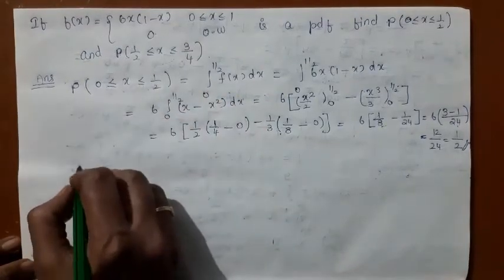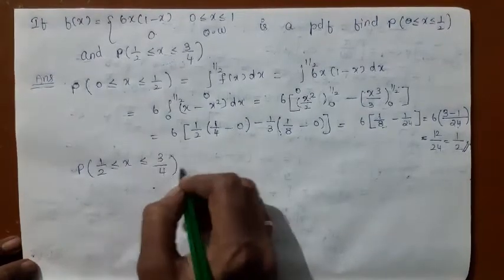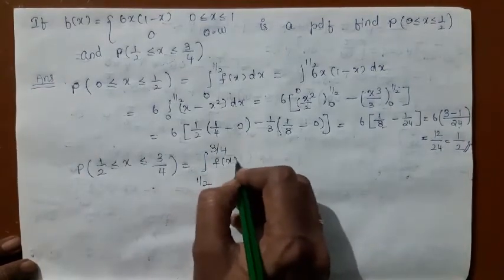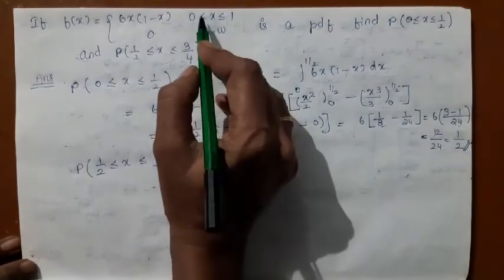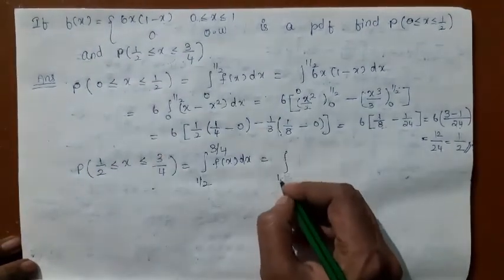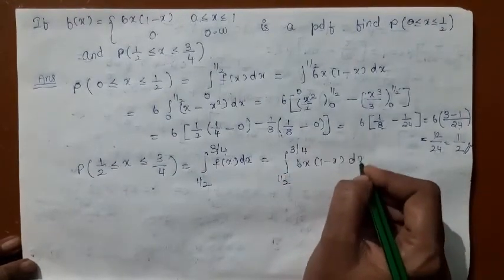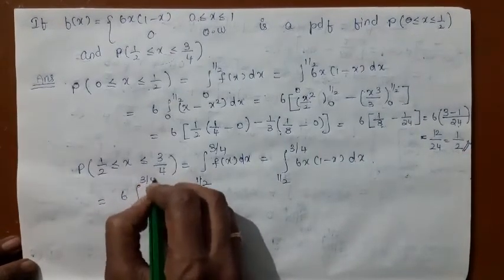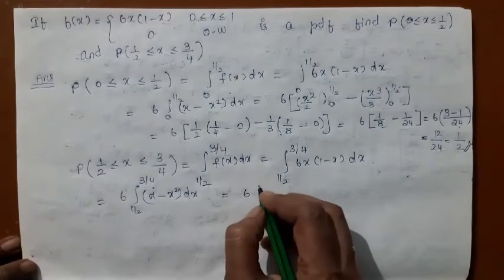Now let us come to the case of the probability that 1/2 ≤ x ≤ 3/4. You should integrate from 1/2 to 3/4. The interval 1/2 to 3/4 again falls within the range [0,1], so f(x) = 6x(1 - x). The integral is from 1/2 to 3/4 of 6x(1 - x) dx.